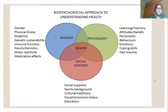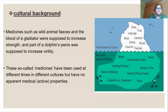Biological factors include gender, physical illness, disability, genetic vulnerability, immunity, immunology, stress reactivity, and medication effects. Next comes cultural background, which has two aspects: visible aspects of culture and non-visible aspects of culture.